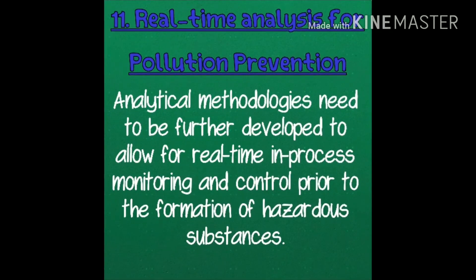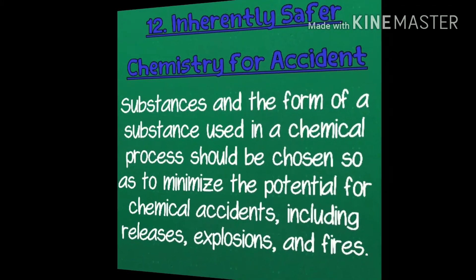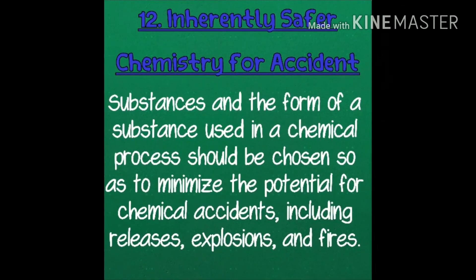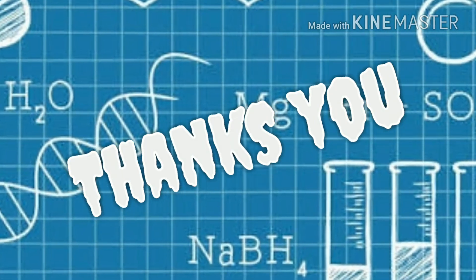Principle 11: analytical methodologies need to be further developed to allow for real-time and in-process monitoring and control prior to the formation of hazardous substances. Principle 12: substances and the form of a substance used in a chemical process should be chosen so as to minimize the potential for chemical accidents, including releases, explosions, and fires.